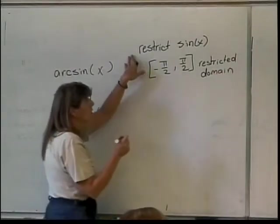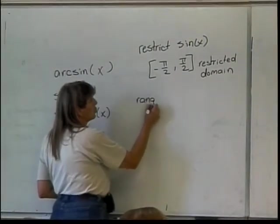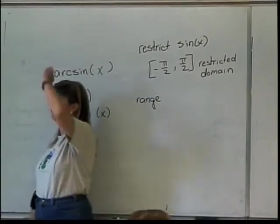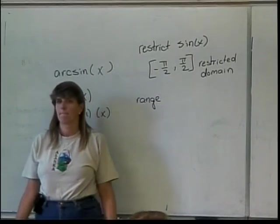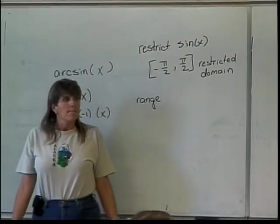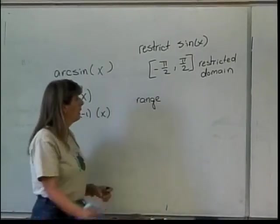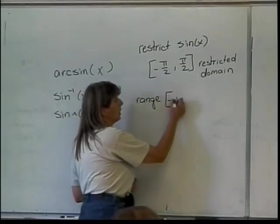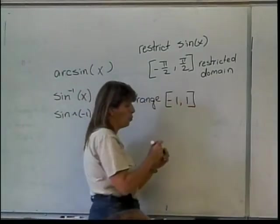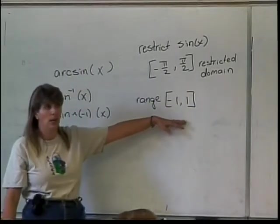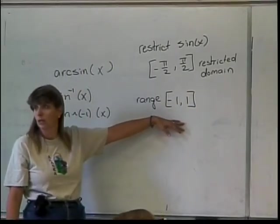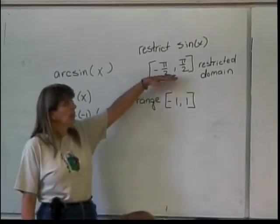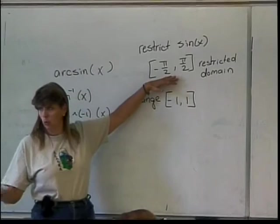Now, for this restricted graph, what is the range? What do my y values go from and to? Negative 1 to 1. And are they included or not? Included. So my range on my restricted graph goes from negative 1 to 1. And that's good because that's everything that I hit with my sine function, right? And that's what I wanted. I wanted all the possible output values I could get, but I needed to restrict my domain so that I don't have any of them twice.